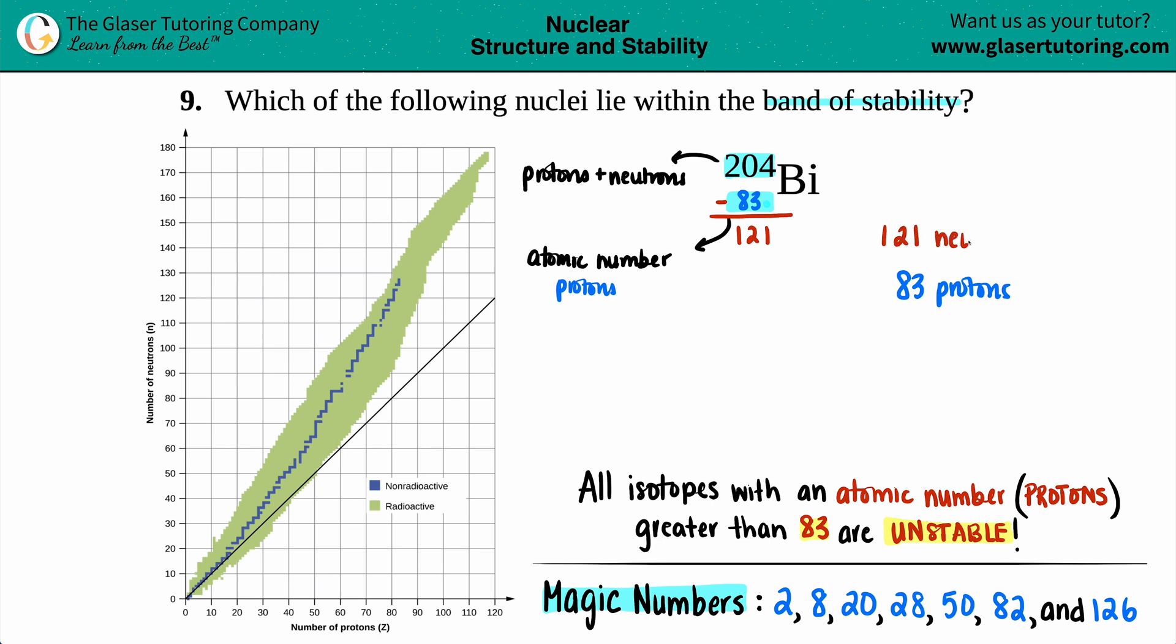The first thing you should do is check to see if you have any magic numbers. There's only seven of them. If you have a magic number, that automatically makes your isotope stable and it would be in the band of stability. But I look here and I don't see it. I see an 82 but not an 83.